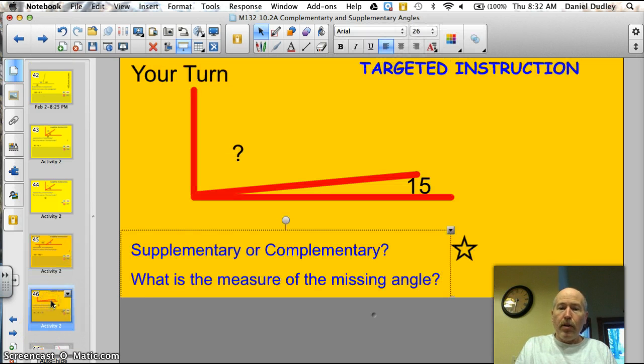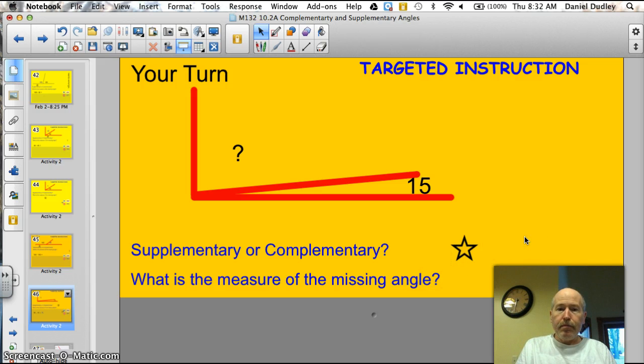Alright, one more for your viewing pleasure. Go for it. You are correct. This is a complementary angle. It forms a right angle or part of a square. What is the missing angle?